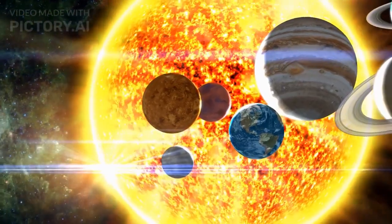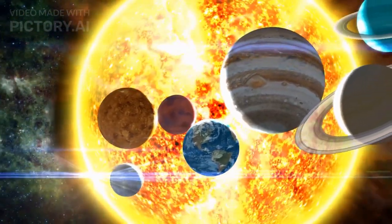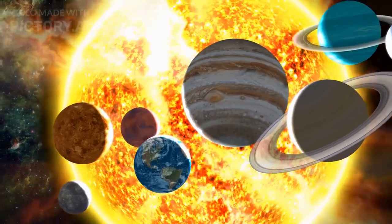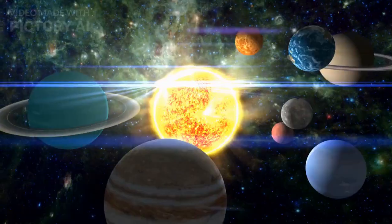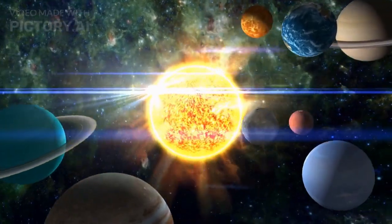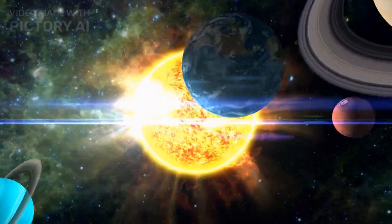Our solar system is a vast and intricate cosmic neighborhood, consisting of the sun, planets, moons, asteroids, comets, and other celestial objects. It's a dynamic system where each body orbits the sun, bound together by the force of gravity.